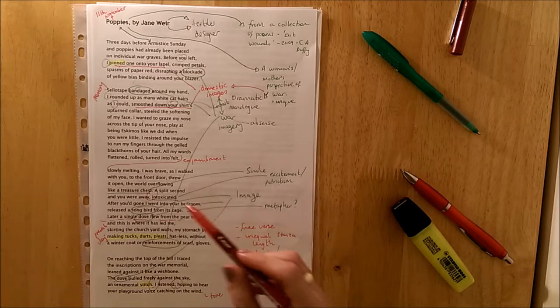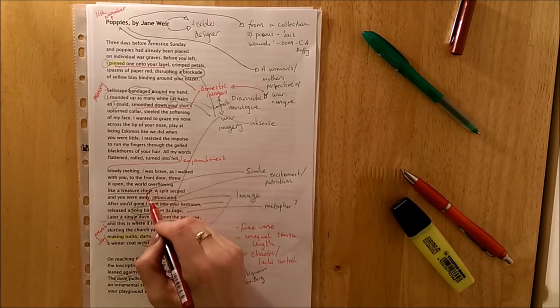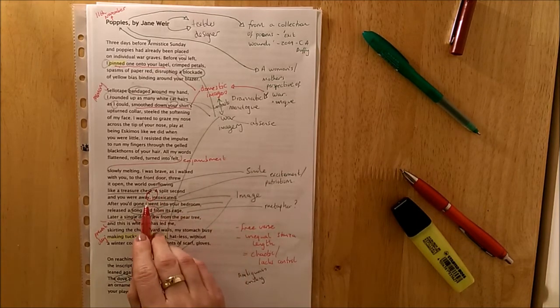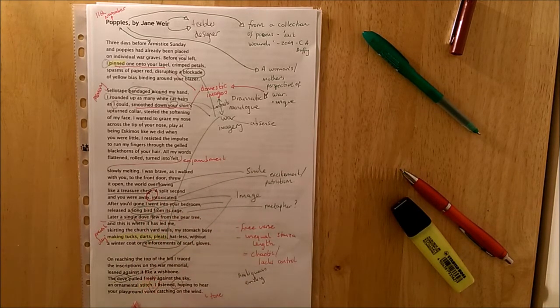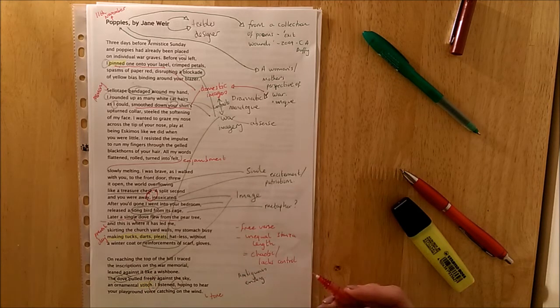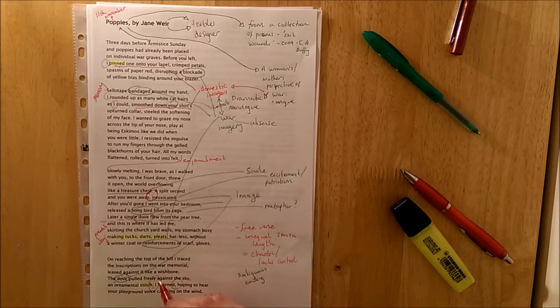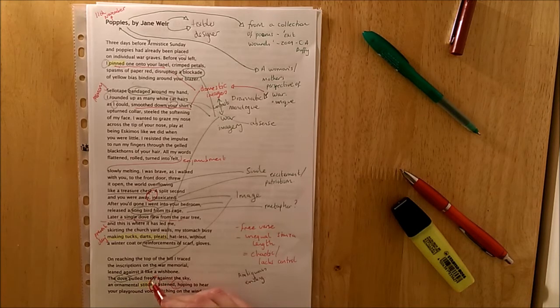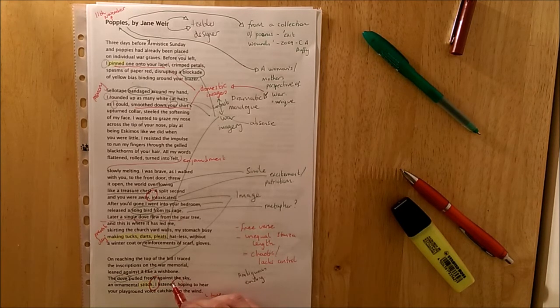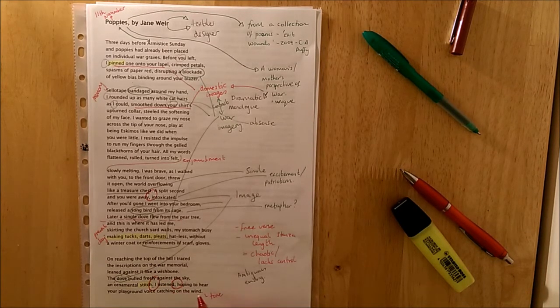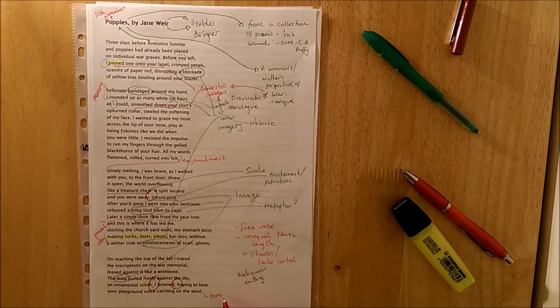The only other structural point to make is the caesura. So here I find it interesting before intoxicated. Really foregrounds this sense that he was intoxicated with ideas. Excited. Maybe naive before going off to war. And then at the end here as well. The pause. I listened. Pause. Hoping to hear your playground voice catching on the wind. And for me this really sums up the tone of the poem. The sad tone that it ends with.